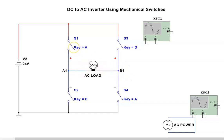I have four mechanical switches that will control current flow through the load. Switch S1 and S4 are linked together and controlled by key A on my keyboard. Switches S3 and S2 are linked together and are controlled by key D on my keyboard. Let's have a look at the power flow and how we alternate current through the load using these switches.